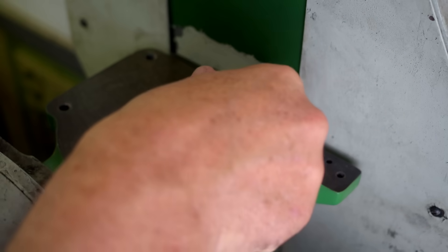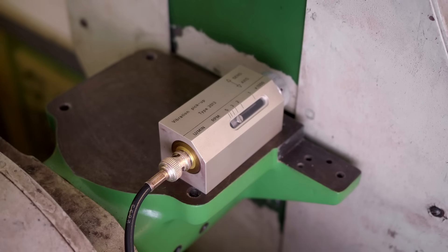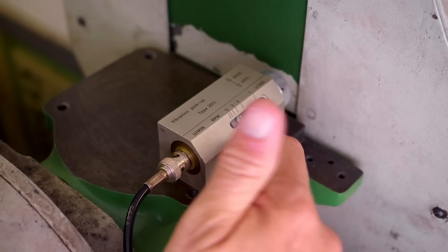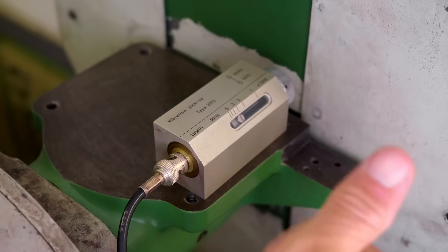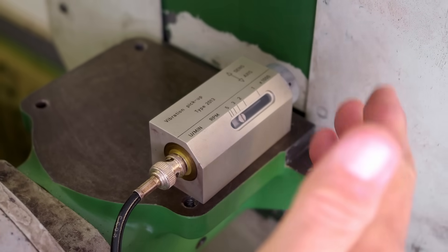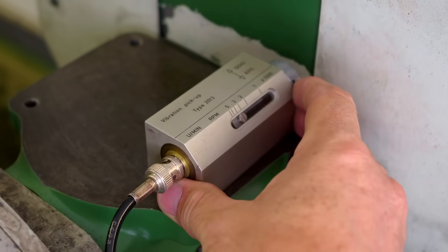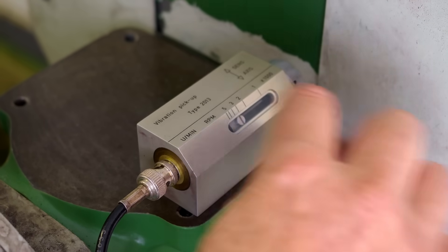I assume if you put the accelerometer on the table you'll get lower amplitudes because there'll be some damping through the frame of the machine but at least my understanding of vibration measurement is it doesn't really matter where you put it.